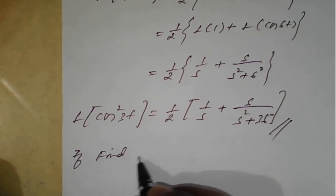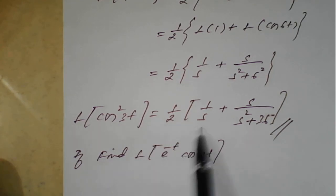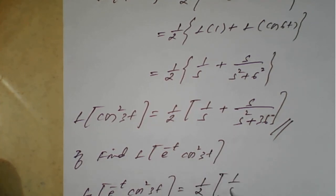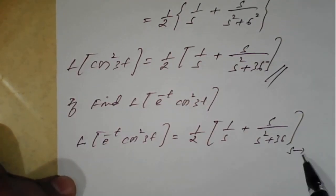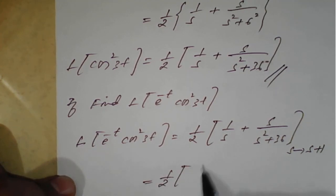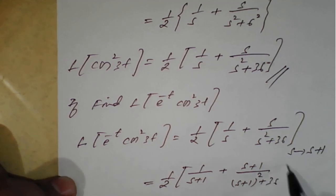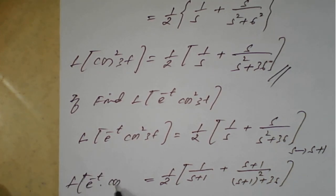Now suppose the question is: find the Laplace transform of e^(-t)·cos²(3t). We already have L{cos²(3t)} = (1/2)·[1/s + s/(s²+36)]. Because of the e^(-t) factor and the shifting property, we replace s with s+1 throughout. The result becomes (1/2)·[1/(s+1) + (s+1)/((s+1)²+36)]. This is the result of L{e^(-t)·cos²(3t)} using the first shifting property.